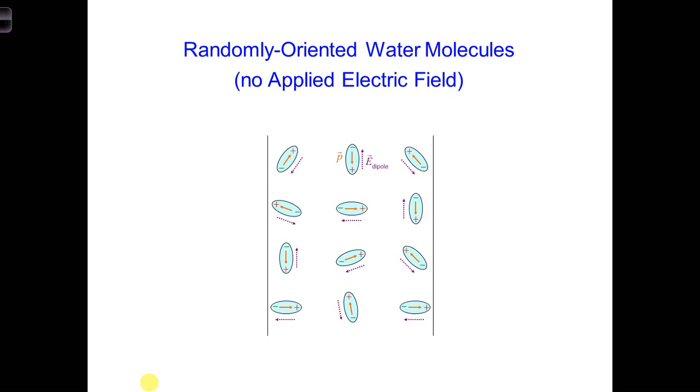When there's no applied electric field, the dipoles in this slab are going to be randomly oriented. And the electric fields associated with each dipole, this dotted arrow, are going to be randomly oriented. And so there's not going to be any net E field. All these randomly oriented electric dipoles are going to cancel each other out.